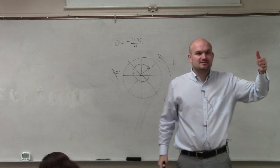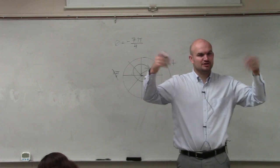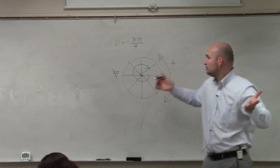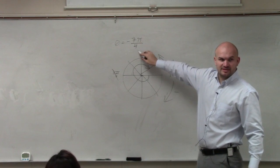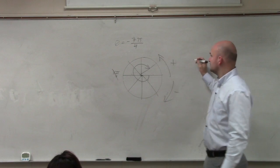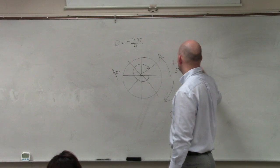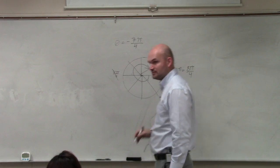The other way to think about this: all the way around the circle is 2π, right? What is equivalent to 2π with a denominator of 4? 2π equals 8π over 4.